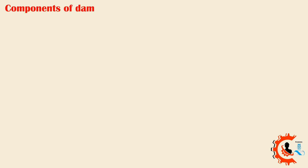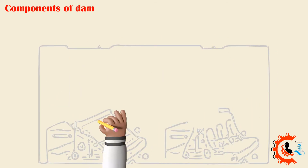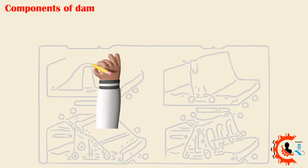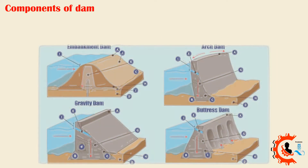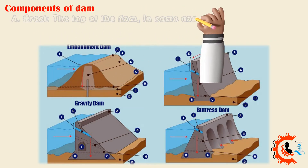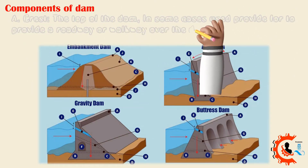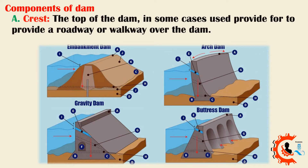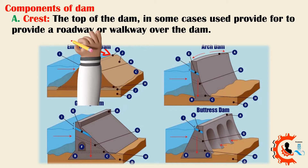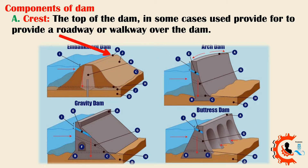Components of dam. A. Crest — the top of the dam; in some cases used to provide a roadway or walkway over the dam.